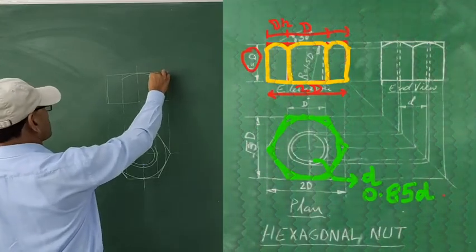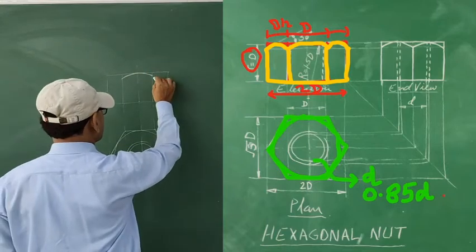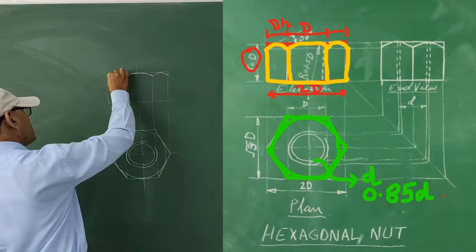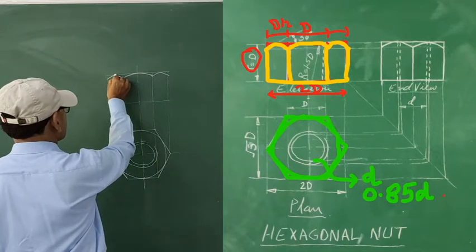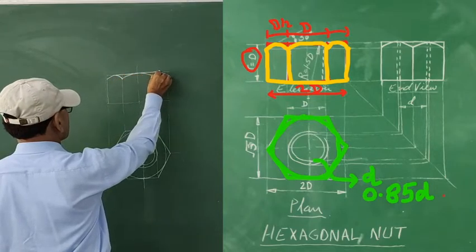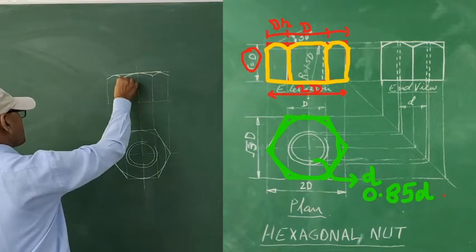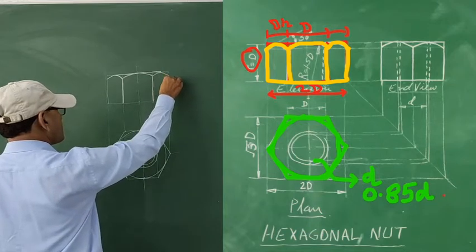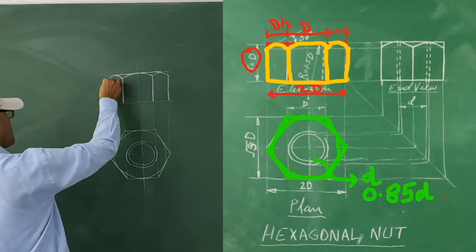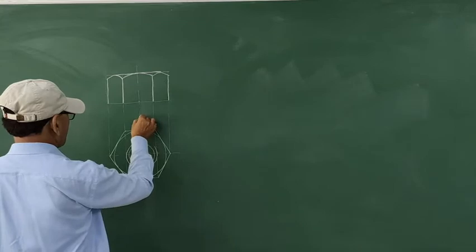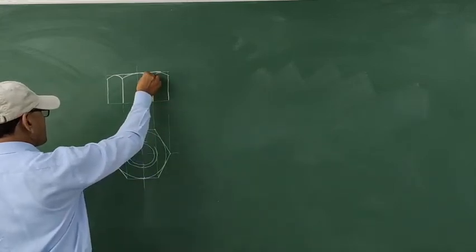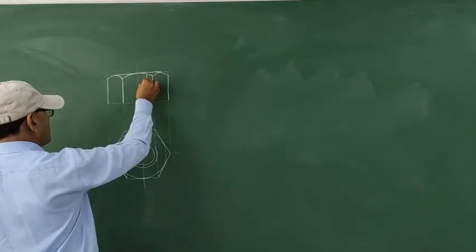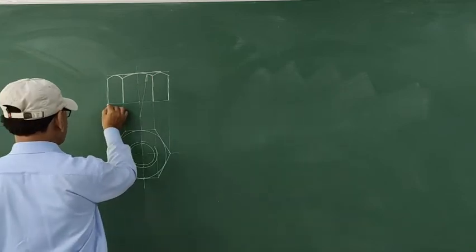Now we move back to the elevation and draw three arcs, as shown in yellow on the right-hand side. The center arc is drawn with a radius of 1.5d, measured on the center line. The projections of where this arc intersects the vertical lines are taken to the other sides, and two more arcs are drawn. These two side arcs can be drawn using the three-point method or the bisection method. This completes the three arcs of the elevation.